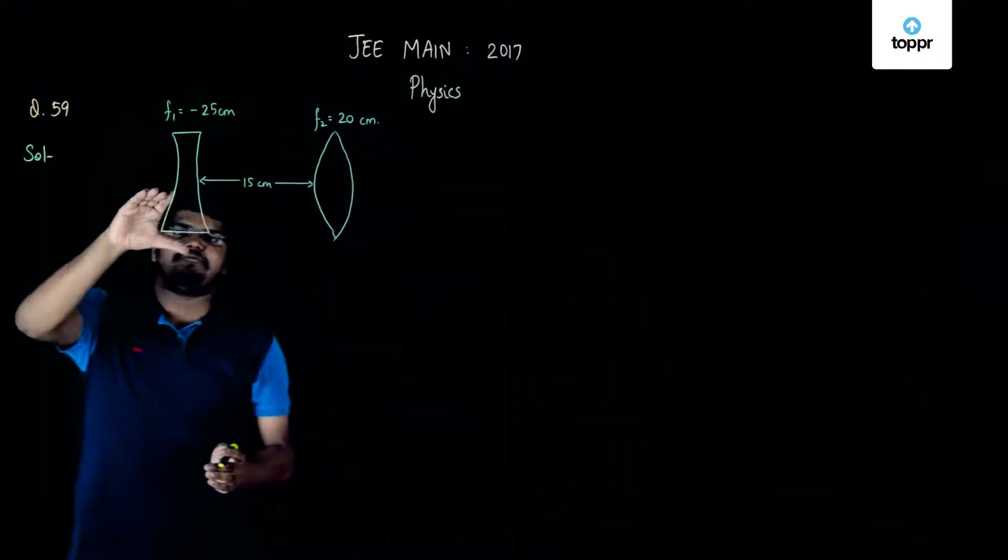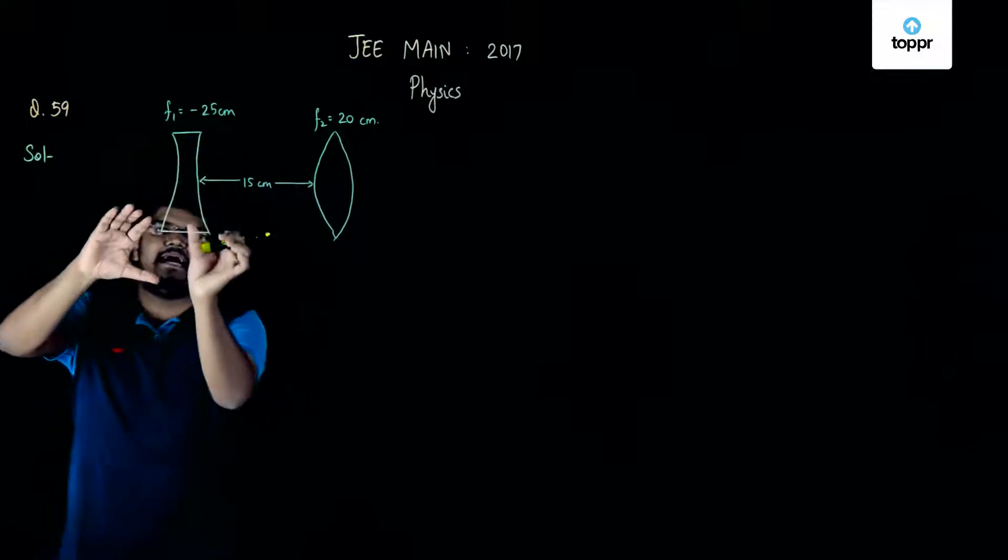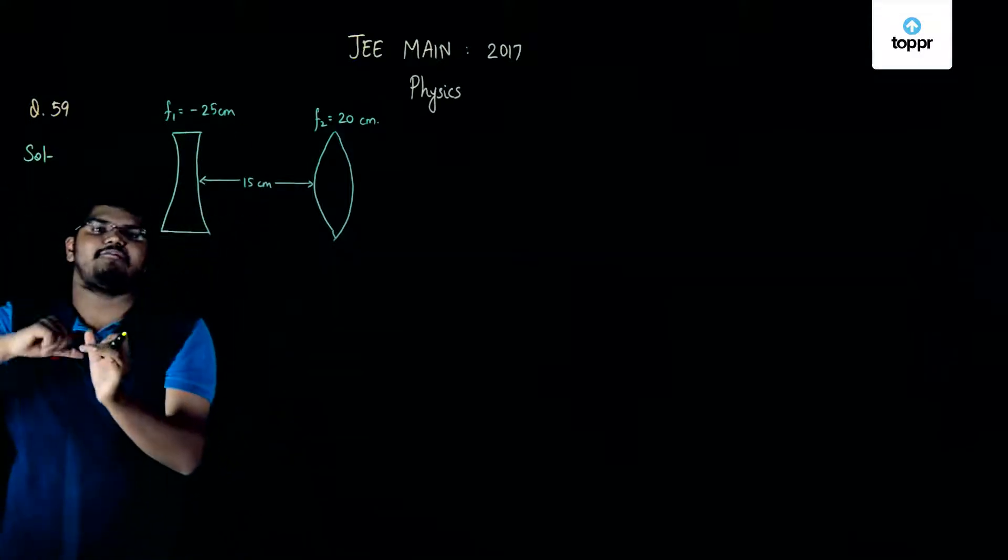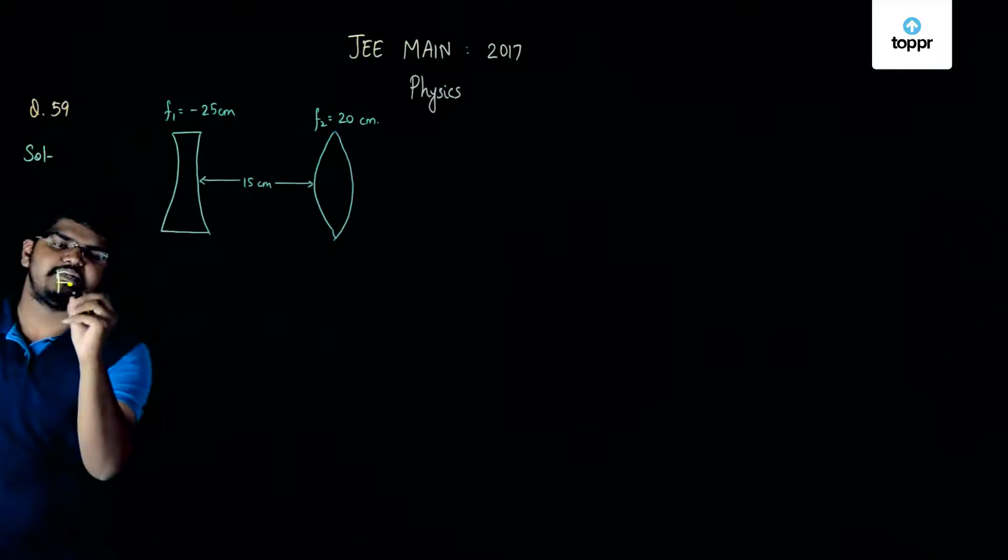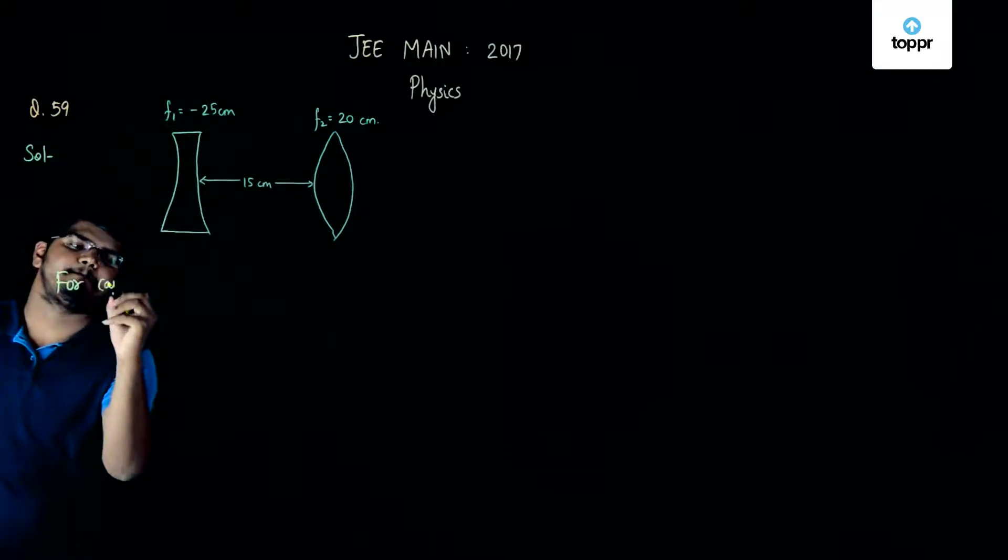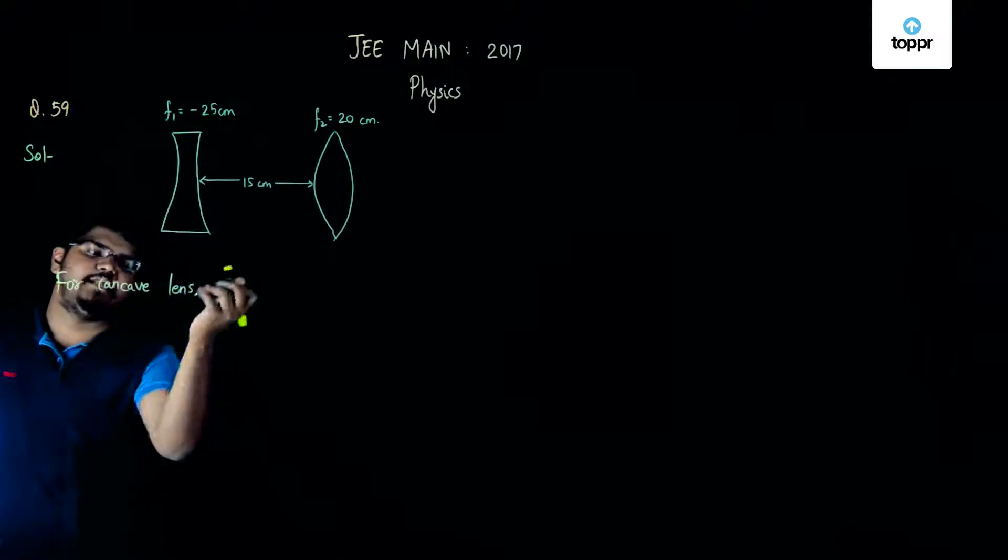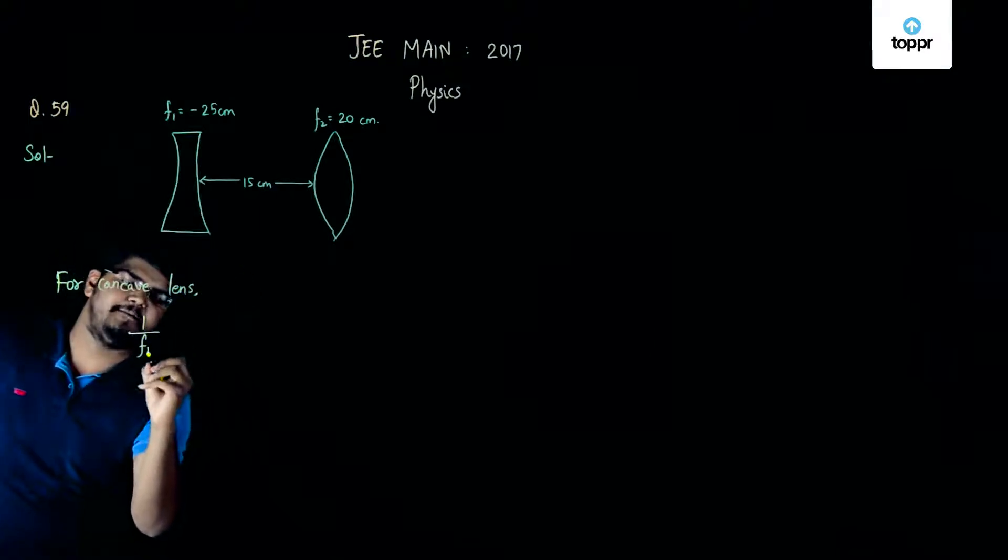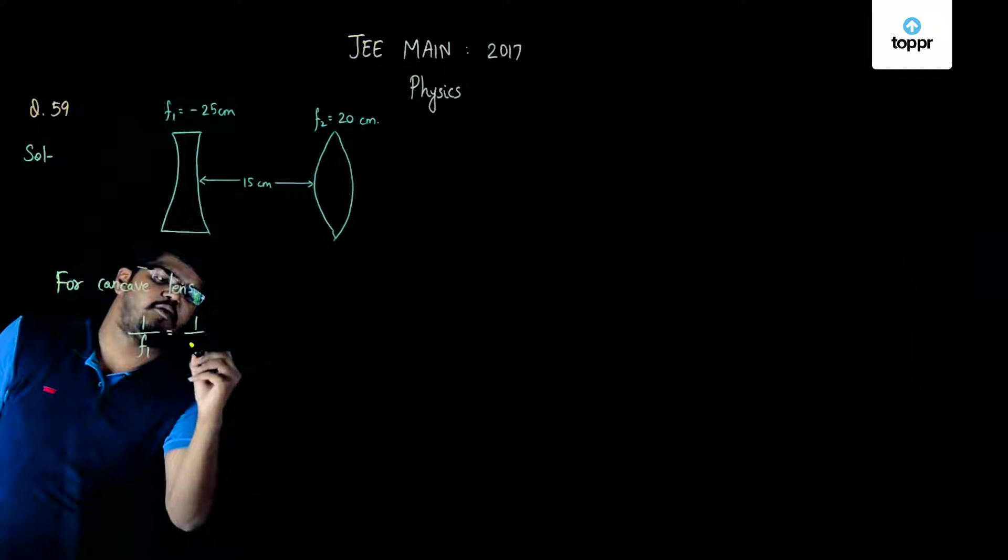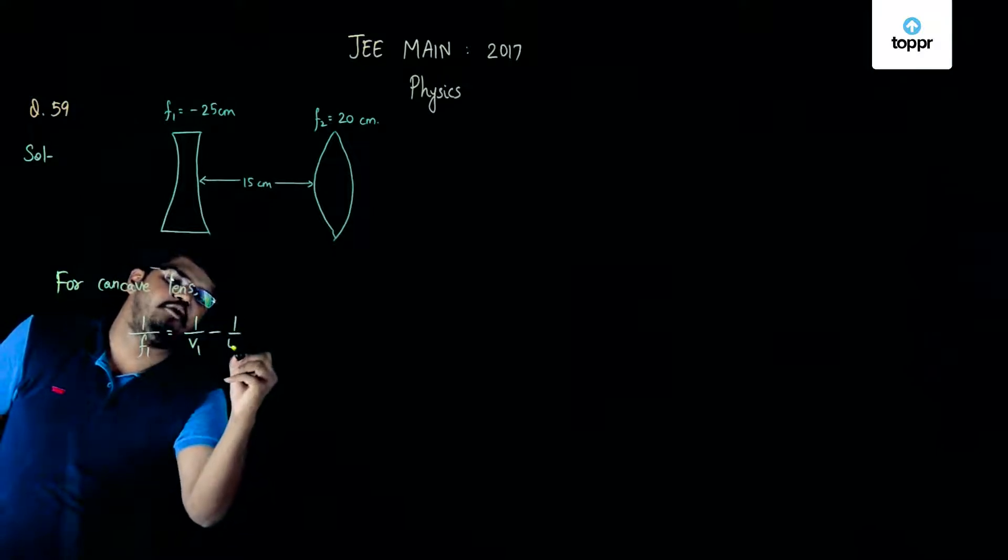Now, we know that if we consider this diverging lens and we consider that a ray of light is coming from infinity, then for this concave lens, if we use the lens formula, it will be 1 upon f1 which will be equal to 1 upon v1 minus 1 upon u1.